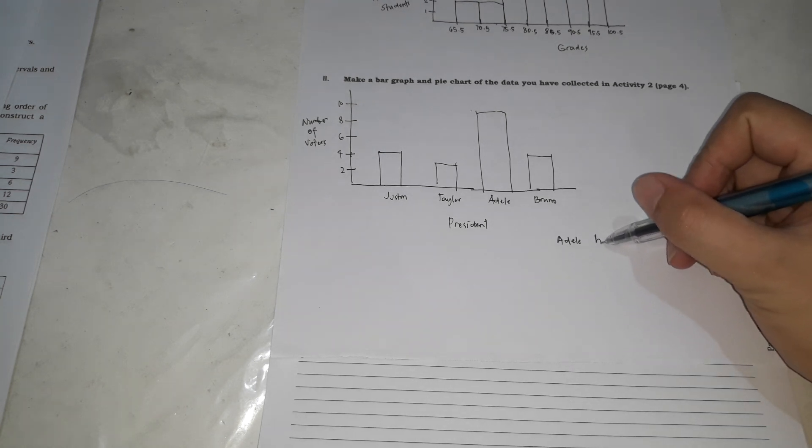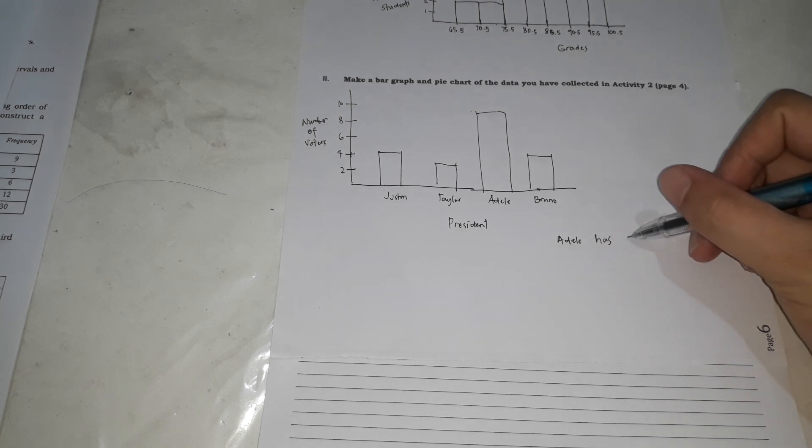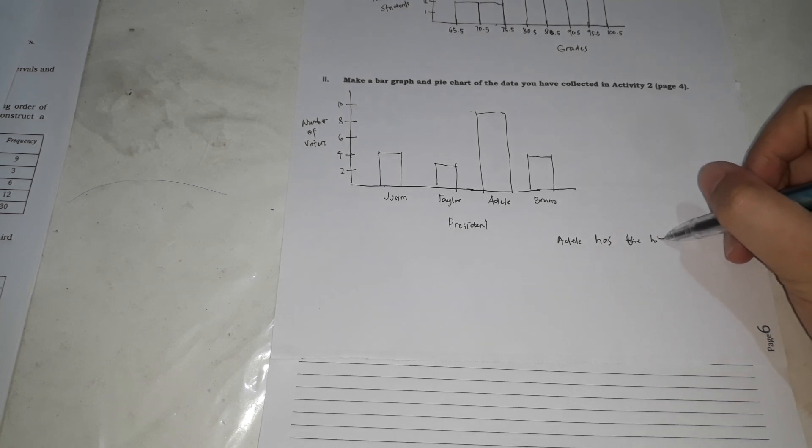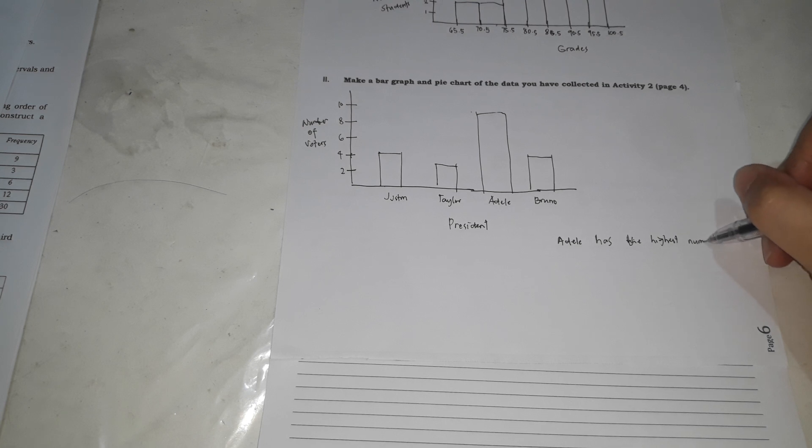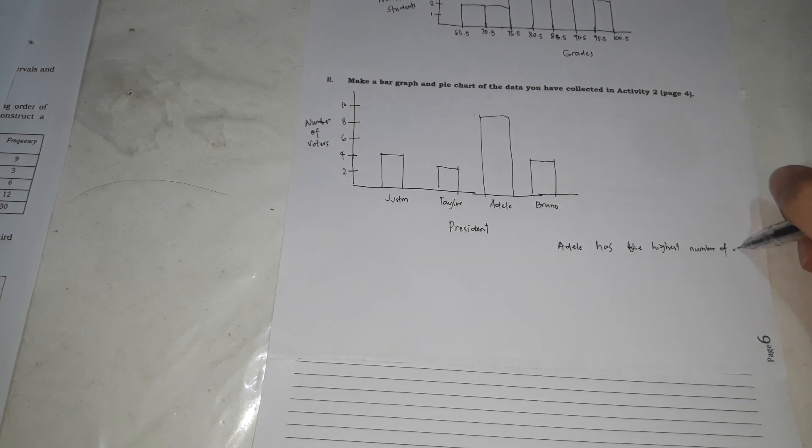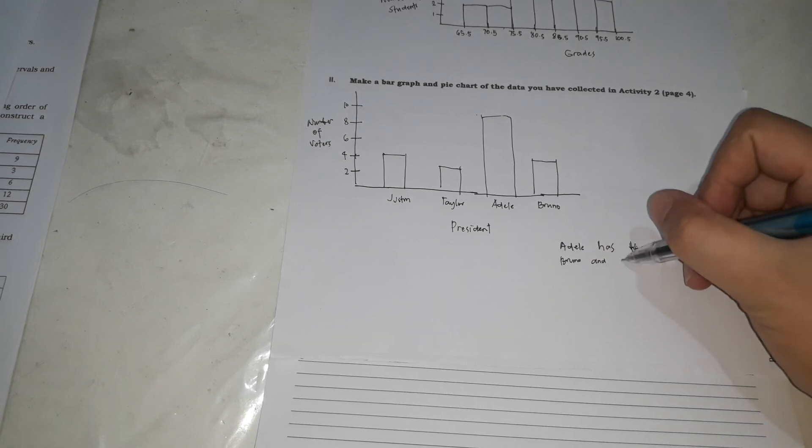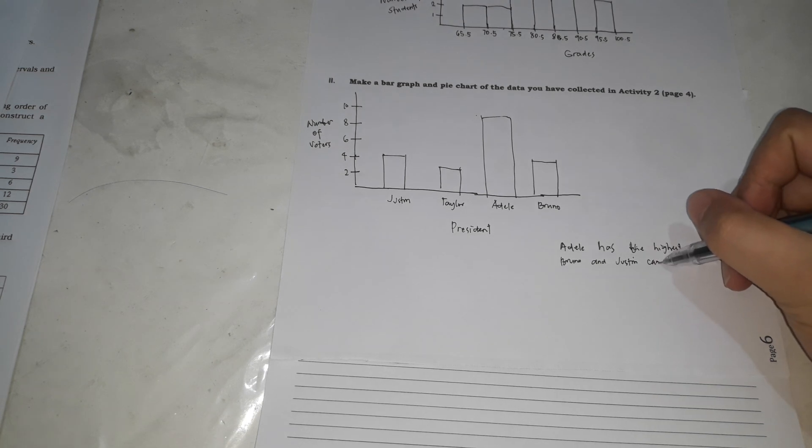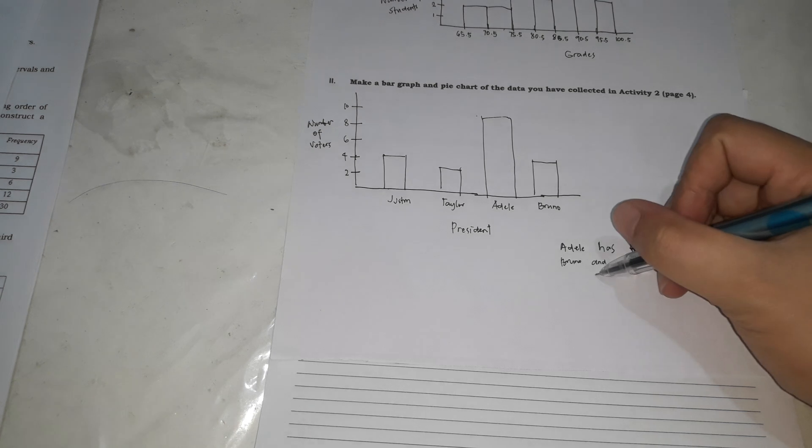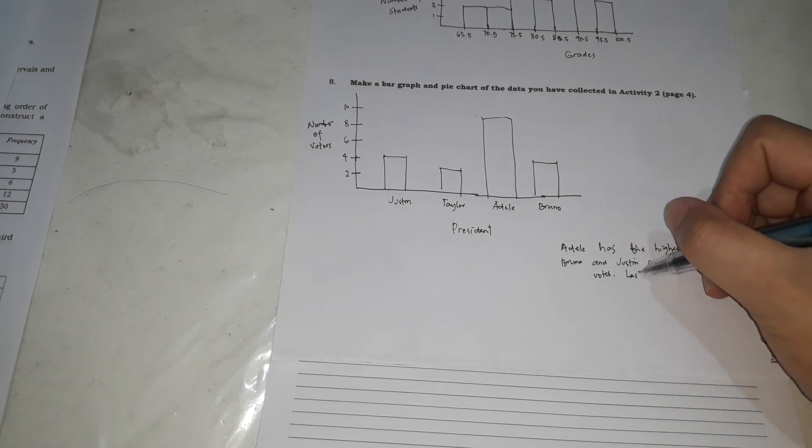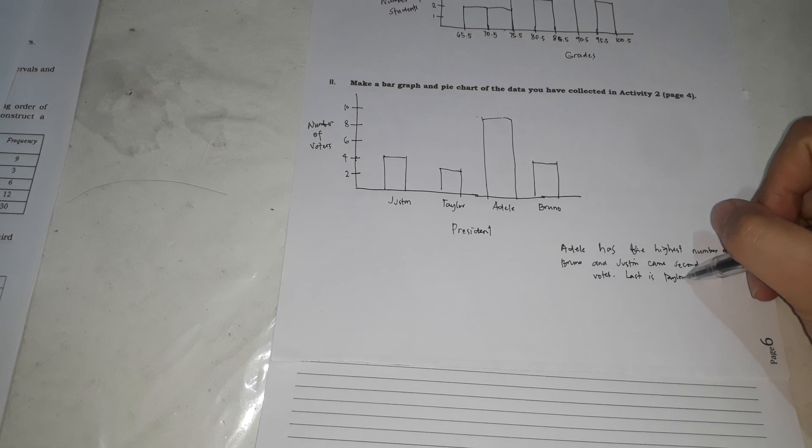Usually, you start with from the highest. Adele has the highest number of votes. And Bruno and Justin came second with 4 votes. Last is Taylor with 3 votes. That's how you're going to interpret. That's easy. Thank you very much.